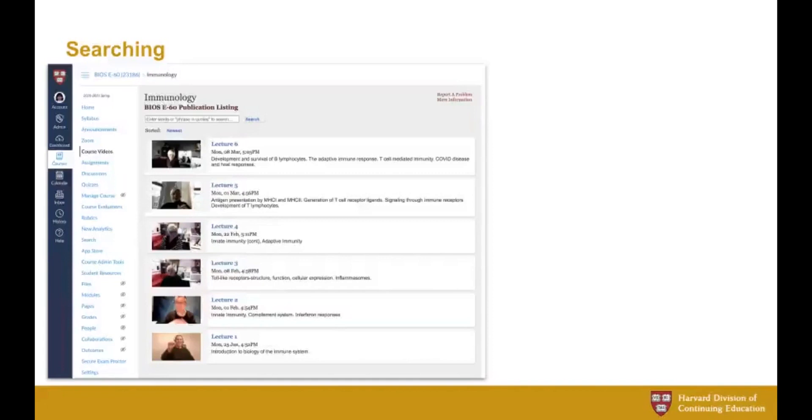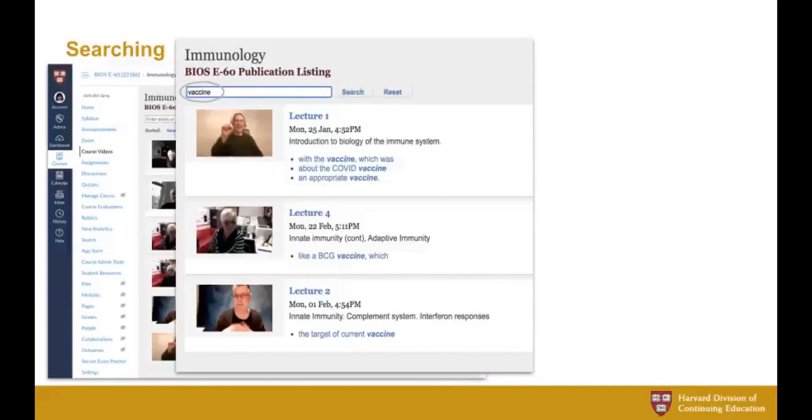So here is our user interface. This is embedded in Canvas. It's our video listing tool for a course. We list all the recordings in a course, and at the top we have a search bar here. Our search capability is very simple. You can search by any of the words or the exact phrase in quotes. And also you can search only within a course. We are not doing searching across courses.